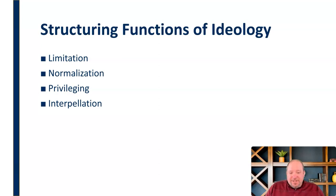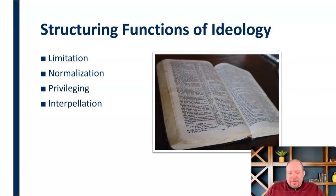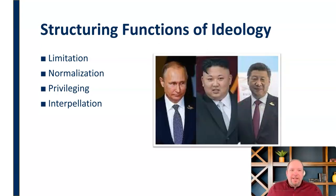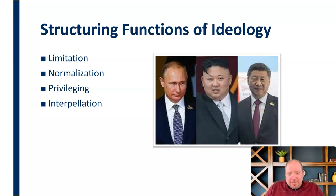Then we have interpolation — another structuring function of ideology. We see this through interpretation and the way that we view different things. Interpolation of the Bible, for example — what it represents, the way that it's read, and frankly, the ways we pick and choose aspects of the Bible to highlight and make our case. We do the same thing with the flag in the United States — we put different meanings into it. And the way that we identify and look at different types of leadership and leaders around the world, we assign value to these things. Who's good, who's bad — it just depends on your perspective. So we see these people as bad because our interpretation or interpolation says so.